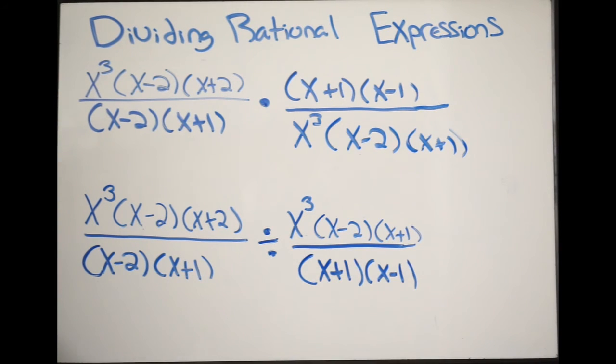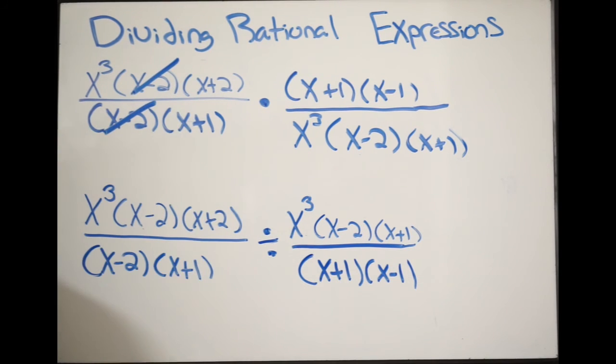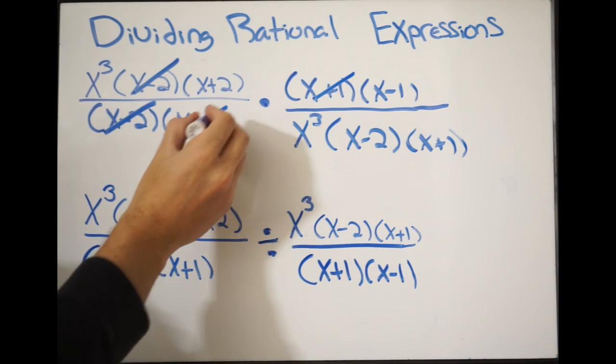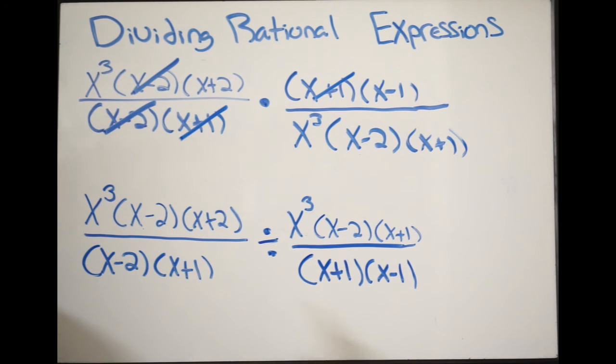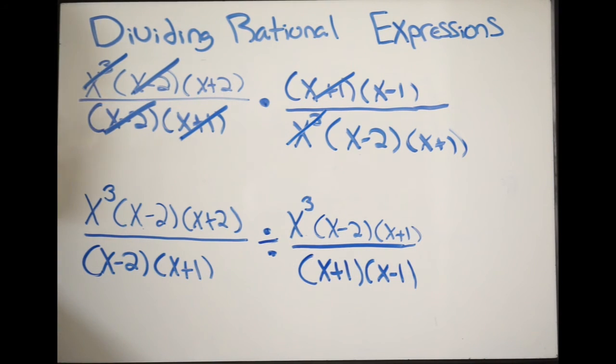Now comes the easy part. Simply cancel out any common factors that you have on both the numerator and denominator. I have x minus 2 on both sides, so those cancel. I also have x plus 1 on both sides, that cancels. I also have x to the third on both sides. At this point, I can't cancel anything else out, so I'm ready to write my final simplified answer.